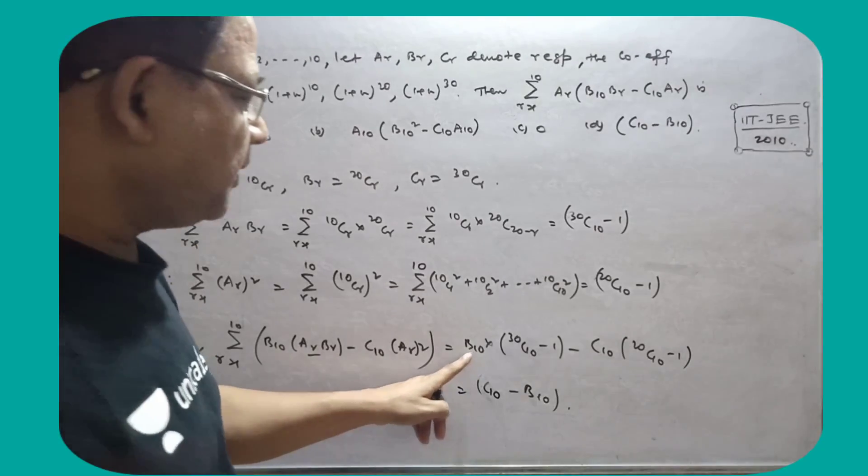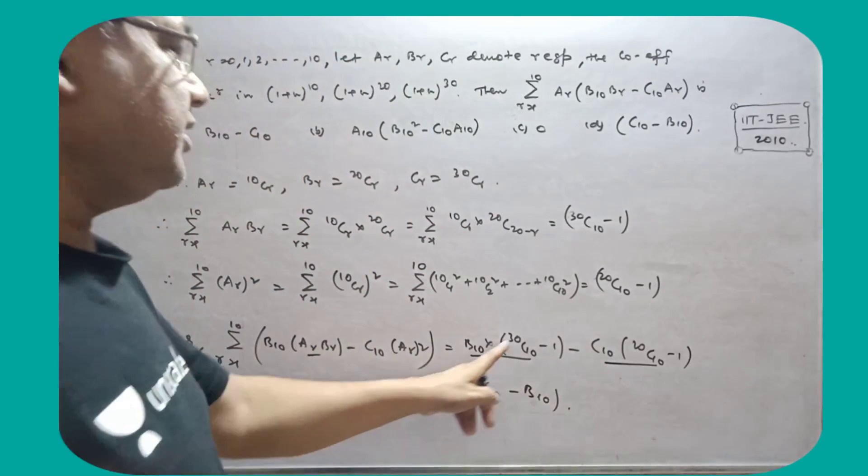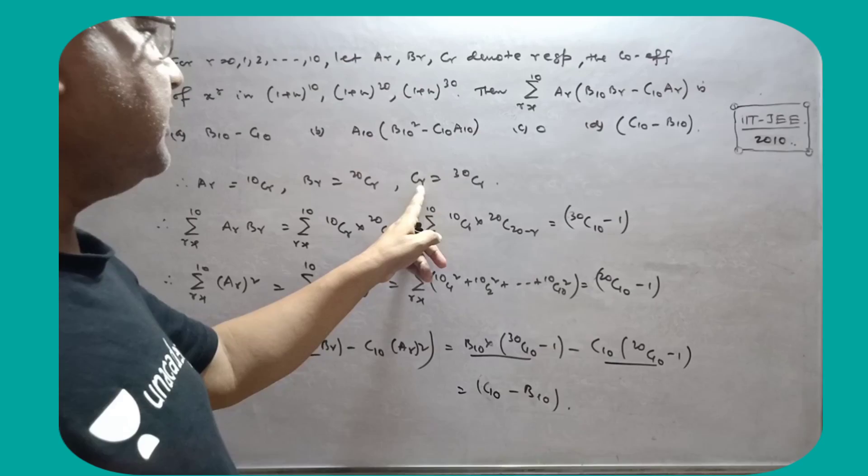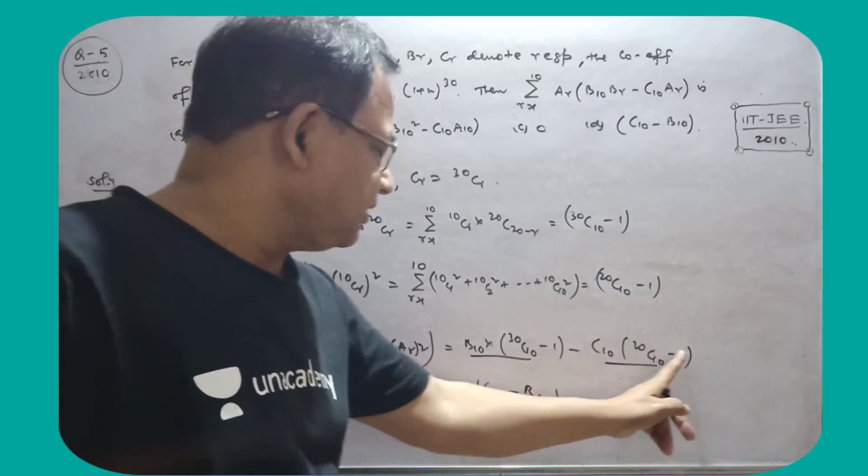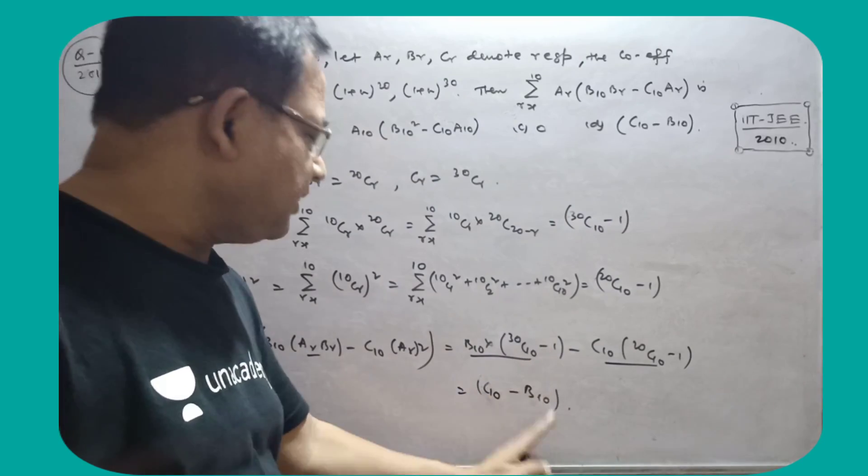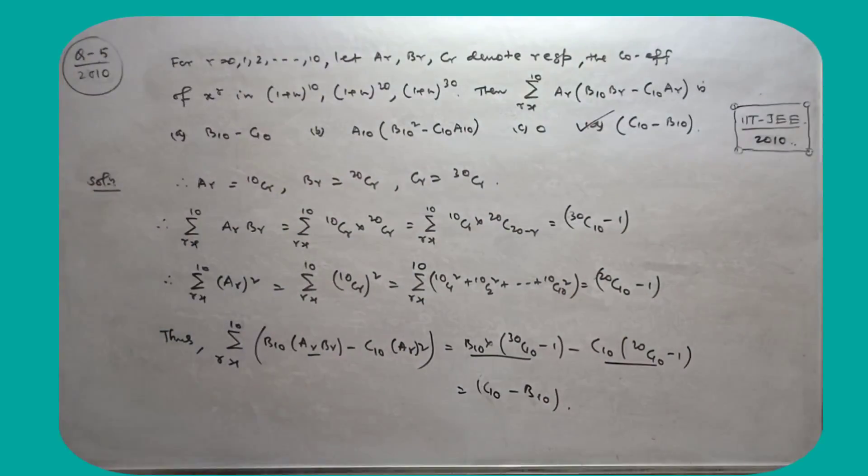So my dear friends, the series is C10 minus b10, positive C10 minus b10. Now b10 is 20C10. C10 means C10 minus b10. So my dear friends, this option is the right choice.